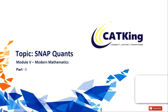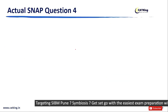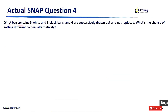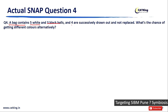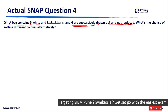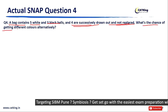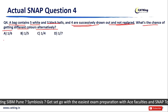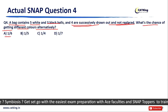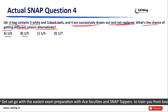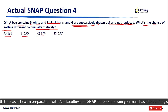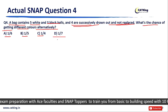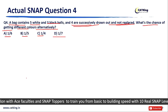Let us have a look at Question 4. A bag contains 5 white and 3 black balls, and 4 are successively drawn out and not replaced. What's the chance of getting different colors alternatively? The options are: Option A: 1/6, Option B: 1/5, Option C: 1/4, and Option D: 1/7.